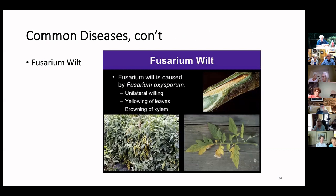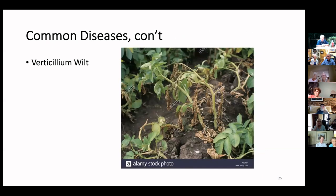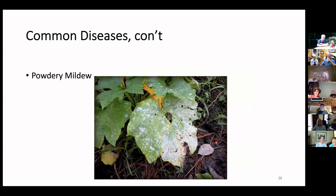Fusarium wilt and Verticillium wilt are also fungal diseases. Fusarium wilt tends to start from the bottom — you get wilting with yellowing leaves that ultimately turn brown and die. Verticillium wilt is the opposite — it starts from the top and goes downward. These can be really devastating and hard to control; the best thing is to pull out infected plants. Bacterial blight in peppers is another one you need to pull out. And there's cucumber mosaic virus and tobacco mosaic virus.